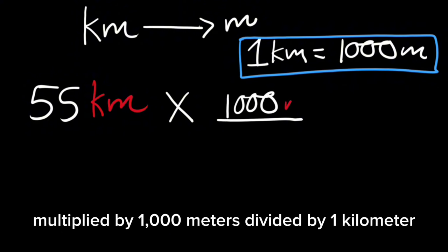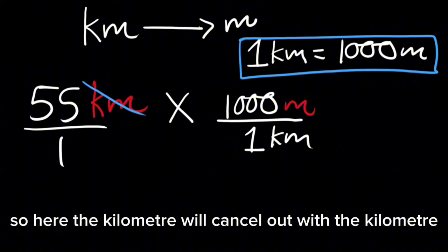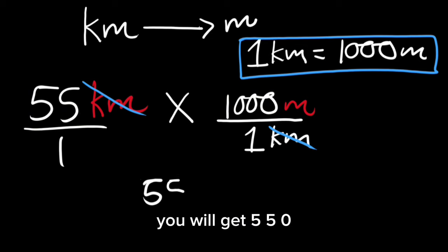This is like 55 over 1, so the kilometer will cancel out with the kilometer. When you multiply 55 times 1,000, you will get 55,000 meters divided by 1.